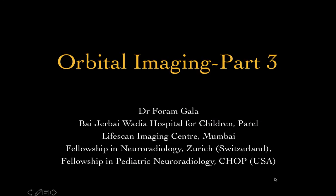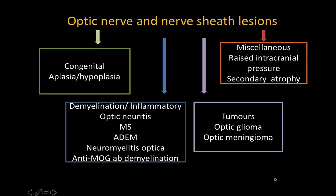Welcome back to the third part of orbital imaging. In the previous parts we saw the bony and compartmental anatomy of the orbit as well as the globe pathologies. Today we are going to discuss about the optic nerve and optic nerve sheath pathologies.